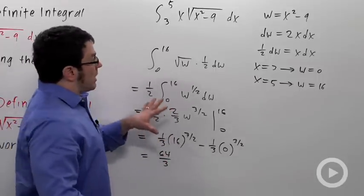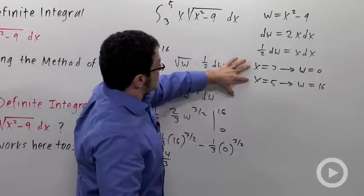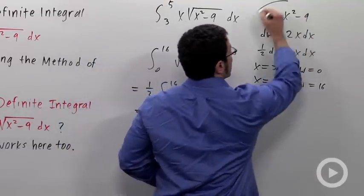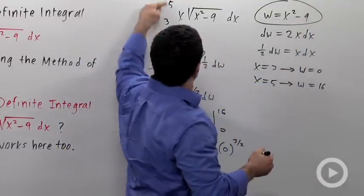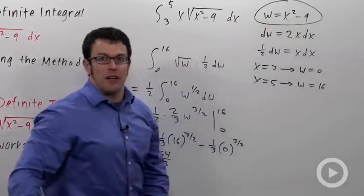So the new trick here is switching over the limits of integration using your substitution. Remember, this formula tells you how. These are x values. Plug them in here and you can get the corresponding w values.